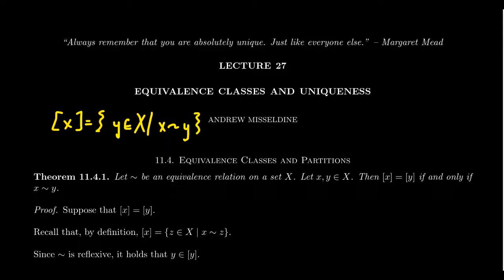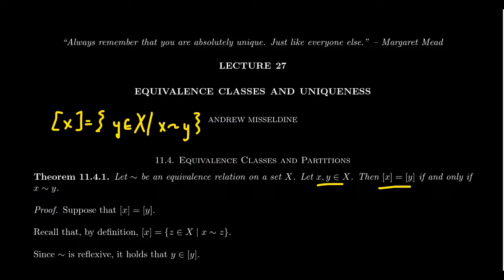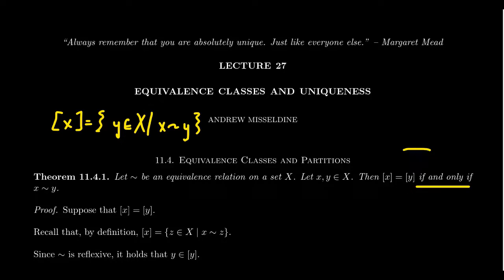There are a few properties we want to prove about equivalence classes in this video, one of which we already stated but didn't prove. Let tilde be an equivalence relation on our set X. Take two elements X and Y inside the set X. Then the equivalence classes of X and Y are equal to each other if and only if X and Y are related to each other. This is an if-and-only-if statement, so we have to prove both directions — sufficiency and necessity.